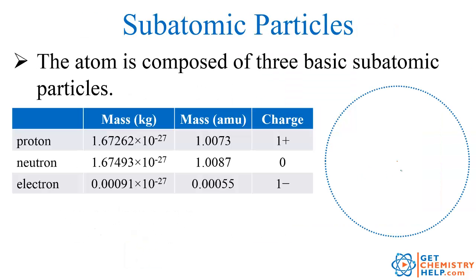Within the atom there are three basic subatomic particles. There is the proton, which we abbreviate p-positive, the neutron we abbreviate n-zero, and the electron we abbreviate e-negative. The proton has a positive charge, the neutron has no charge — it's neutral, which is why it's called neutron — and the electron has a negative charge.